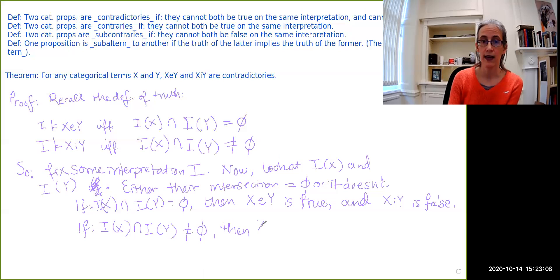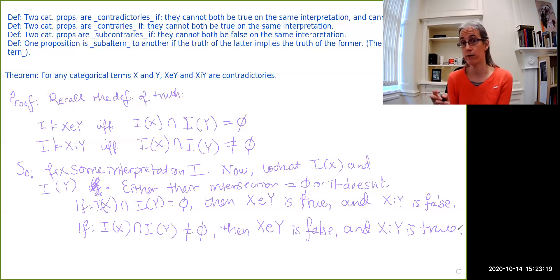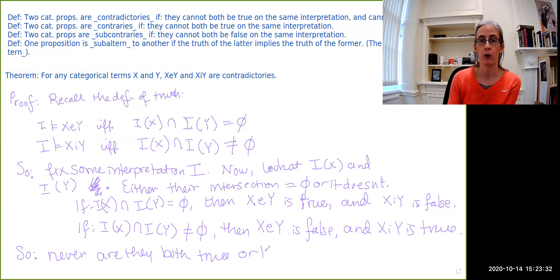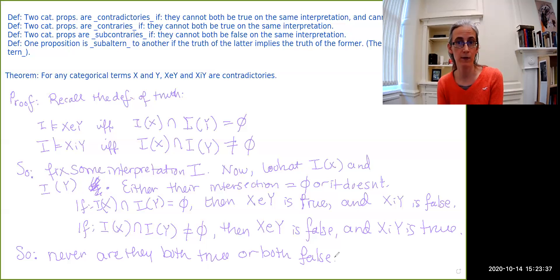Now consider the other case. If the interpretation of x intersected with the interpretation of y is not the empty set, then we know that x e y is the one that's false and x i y is true. We get this just by looking at the definition of truth. So never are they both true or both false. Whatever truth value one of them has, the other one has the opposite one. So e and i claims are contradictories.